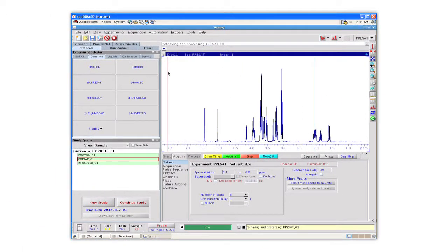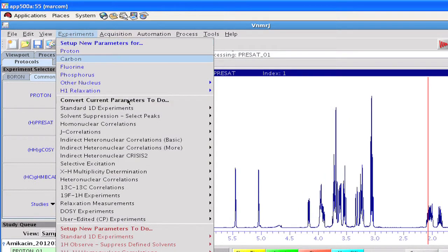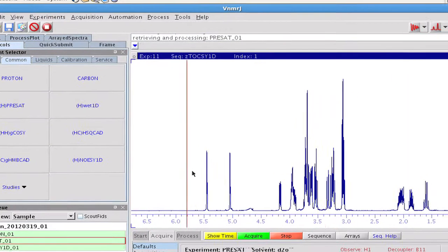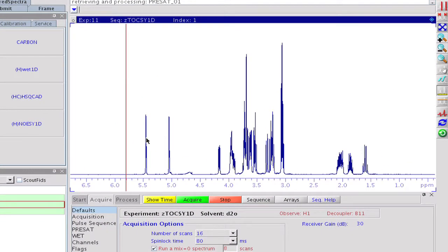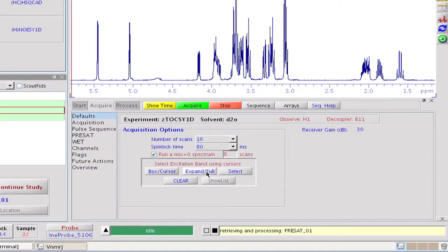A proton spectrum with solvent pre-saturation has been collected and serves as a starting point in our setup procedure. First, we convert the current parameter set to be ready for the selective 1D toxi acquisition. By doing so, we import all sequence-specific parameters while keeping all the others that have been optimized on the pre-sat spectrum. The spectral window, for example, or the pre-saturation conditions, just to mention a few.